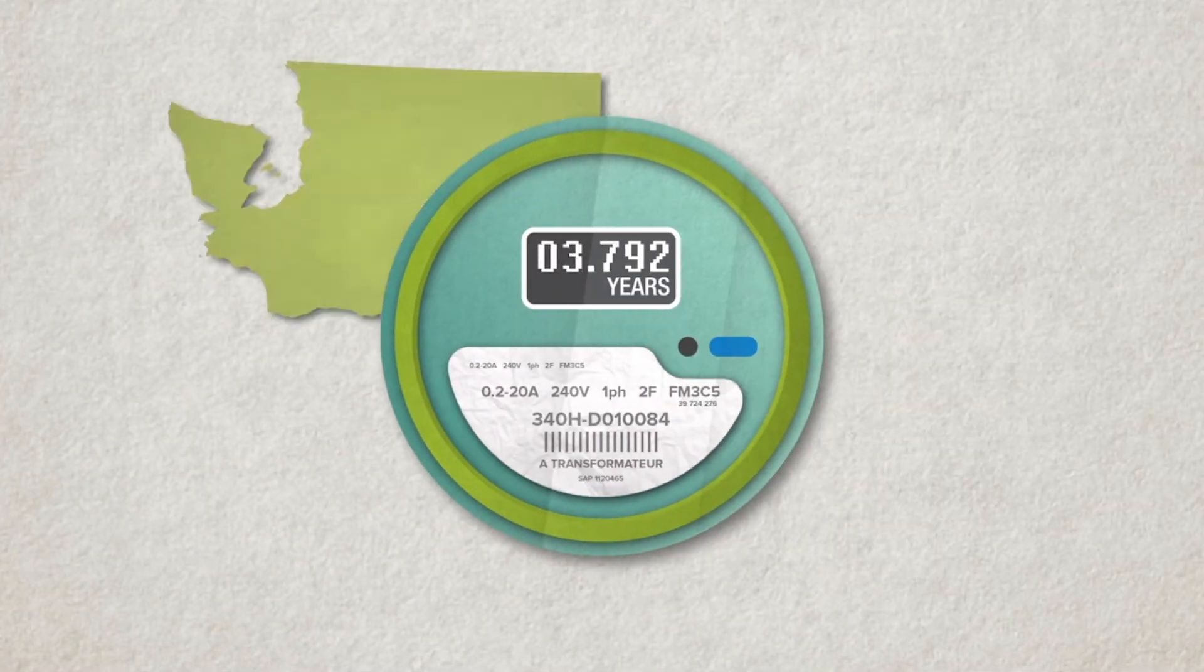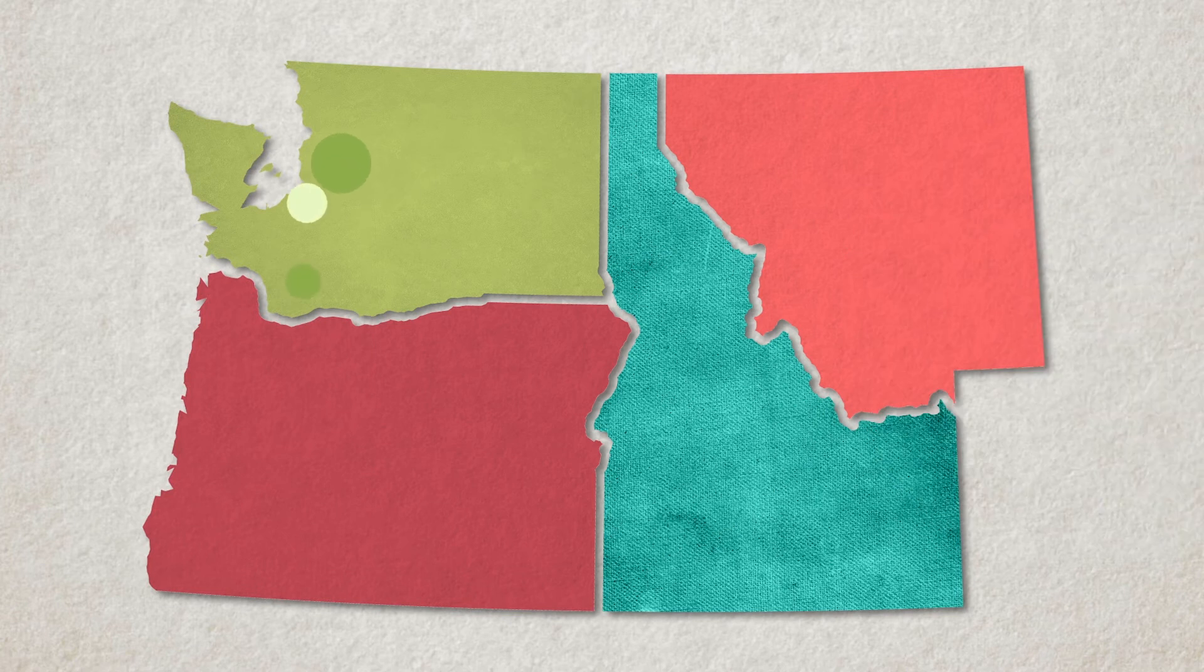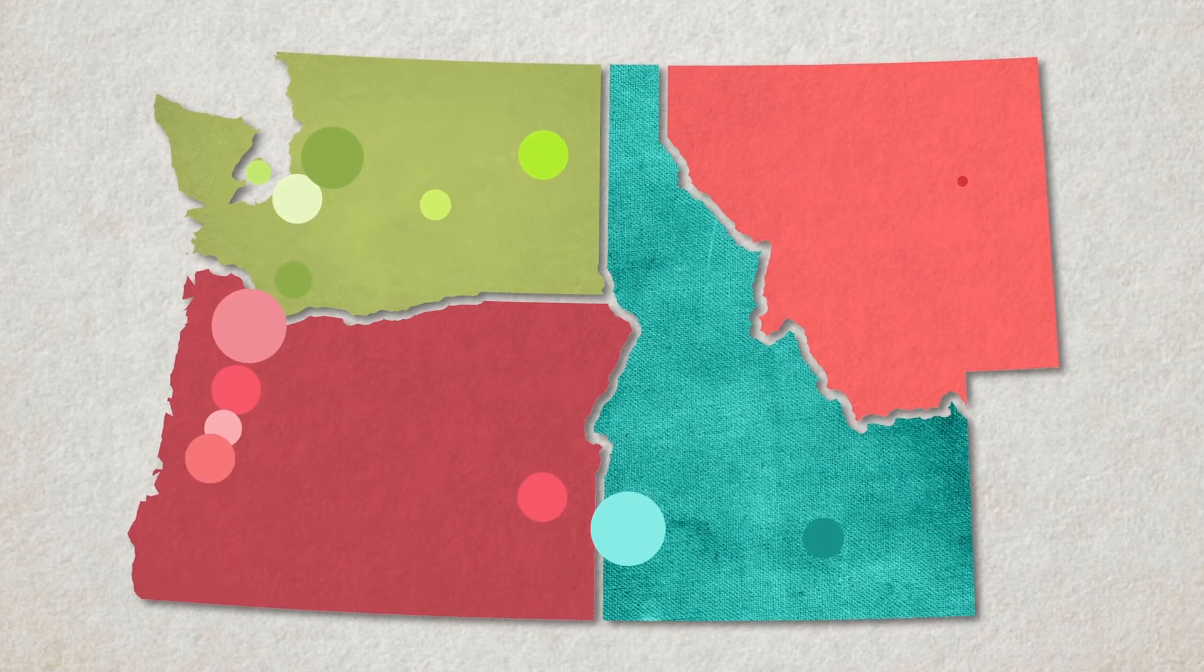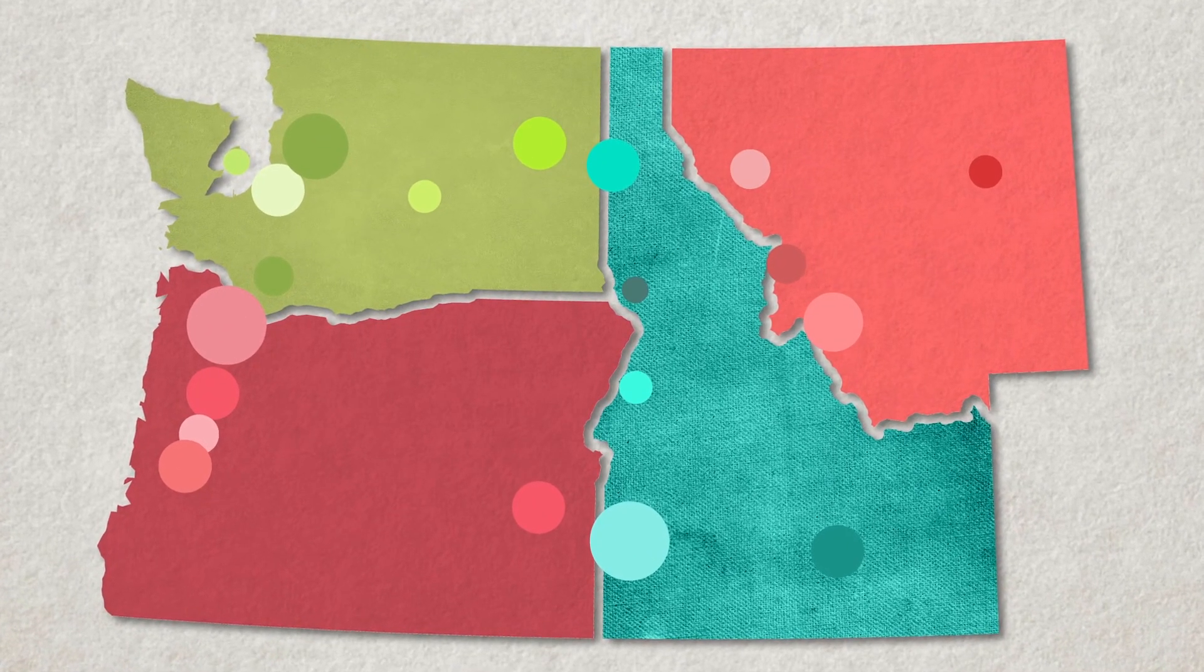Every five years, the Northwest Power and Conservation Council updates the Northwest Power Plan. At the same time, the Council establishes how much energy is used in each important market in the region. To do this, the Council develops an efficiency baseline for each market.